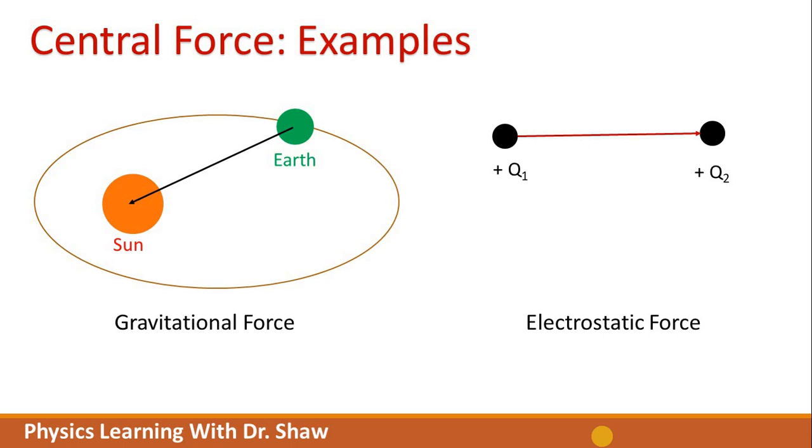The first example was gravitational force where the force is directed towards a point and here force is directed away from a point. Again another example, if we have a positive and negative charge then this minus q2 charge feel an electrostatic attraction towards the point where the charge q1 is situated. Electrostatic force is also inversely proportional to square of distance between the charges and that is what exactly the definition of magnitude of central force that central force magnitude is a function of distance between the points.